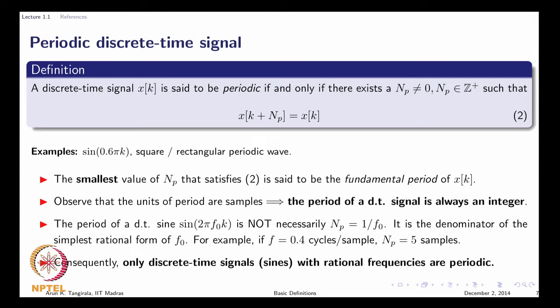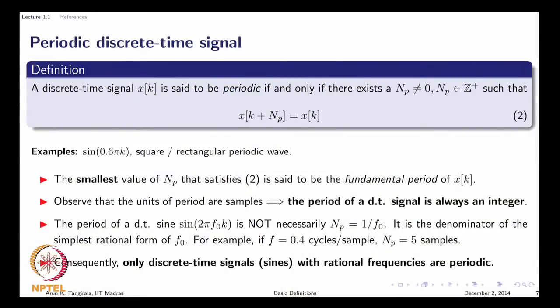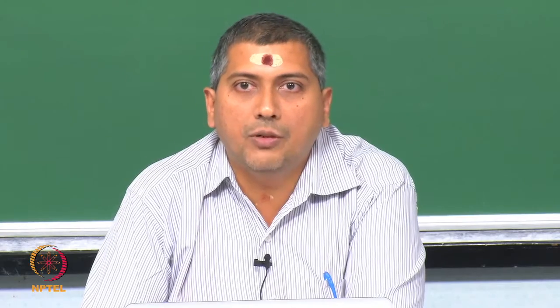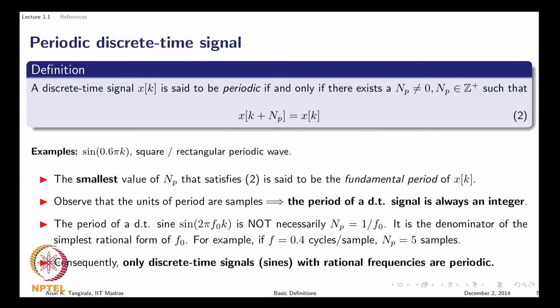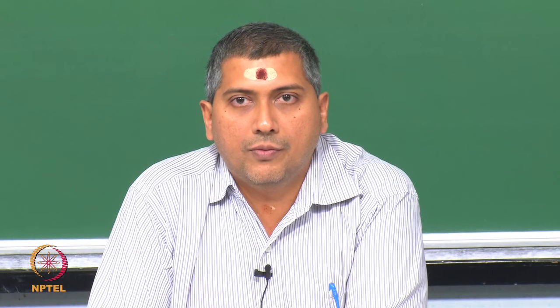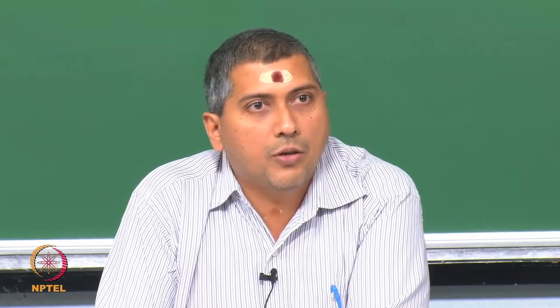When it comes to periodic discrete time signals, there are striking differences from continuous time counterparts. A discrete time signal is periodic if and only if you can find an integer number of samples after which you notice a repetition — in contrast to continuous time where the period could be any real value. The period must be a positive integer, expressed in samples. Therefore, for a sine wave sin(2π f₀ k), you cannot say the period is 1/f₀ if 1/f₀ is not an integer. For example, if f equals 0.3, then 1/0.3 is not an integer, so this is not a valid period.